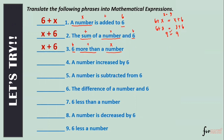Number four: 'A number increased by six.' A number, increased — operation is addition — by six. So we have x plus six. Number five: 'A number is subtracted from six.' We have a number x.